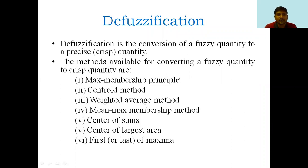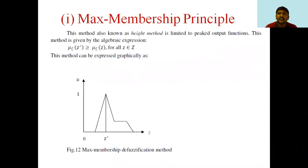For the conversion of fuzzy to crisp quantities we can follow various methods. These are: maximum membership principle, centroid method, weighted average method, mean max membership method, center of sums, center of largest area, and first or last of maximum.